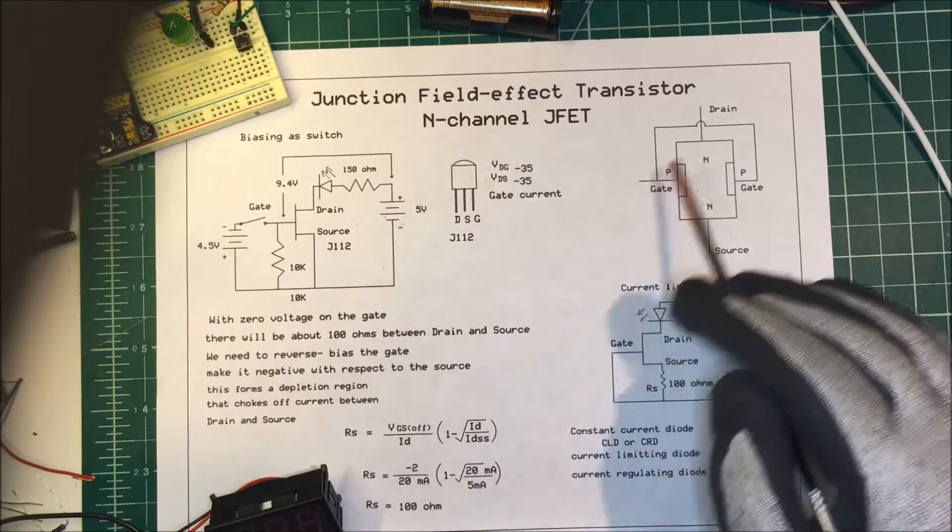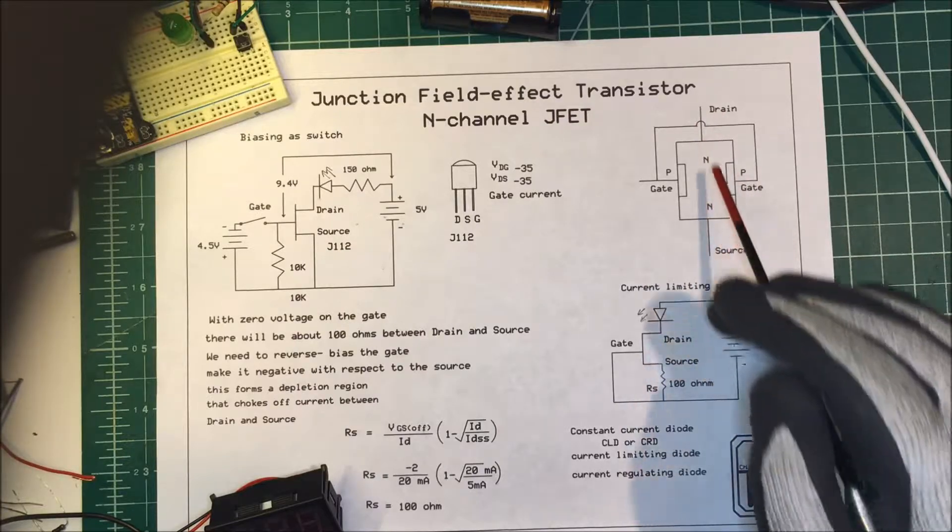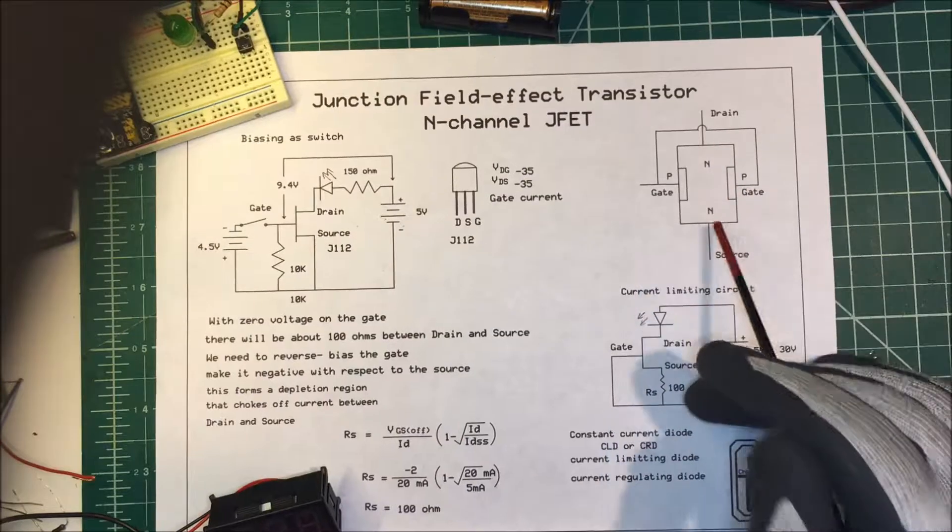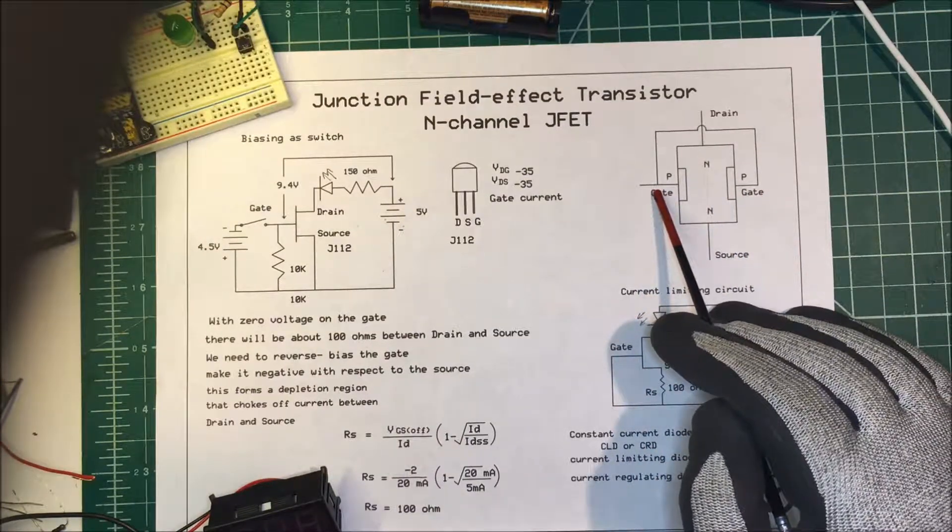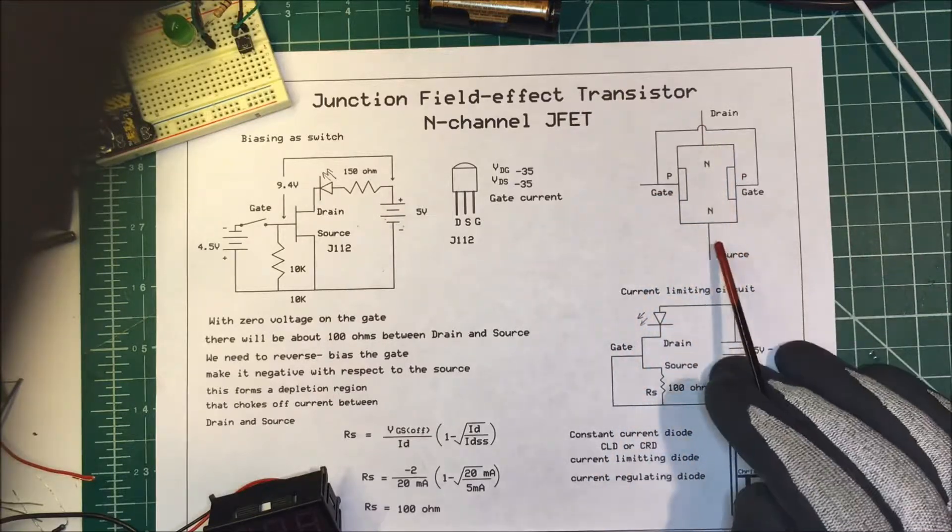Without any voltage on the gate, the current can flow from the drain to the source, and on this one, it's about 50 milliamps. If we put a negative voltage on the gate, we reverse bias the gate. It forms a depletion region here and here, and it blocks off the current from flowing.